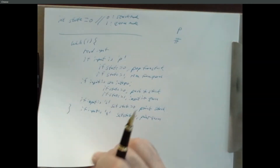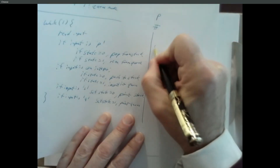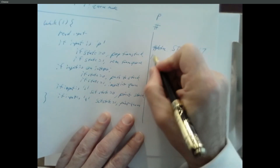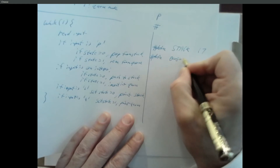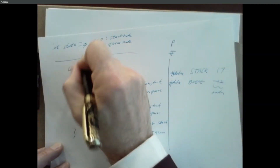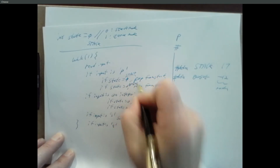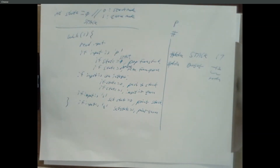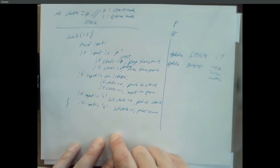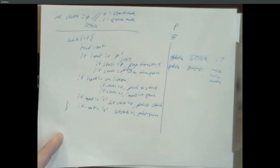This zero-one approach is error-prone and kind of sloppy. Here's what you can do: at the beginning of your program, use some #defines. Define STACK as some value — doesn't matter, could be 17. Define Q as something else — negative 12. Now initialize your state equal to STACK, and say 'if state equals STACK' or 'if state equals Q.' Now your magic values are not something you have to deal with as a programmer. As long as STACK and Q represent different symbols, you can use these readable symbols and it's pretty unambiguous what's going on.